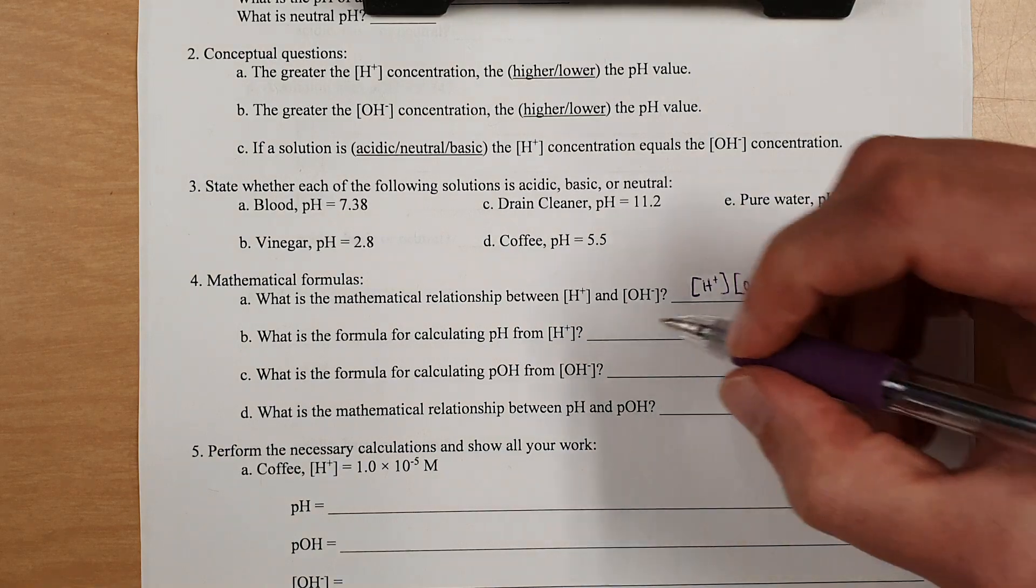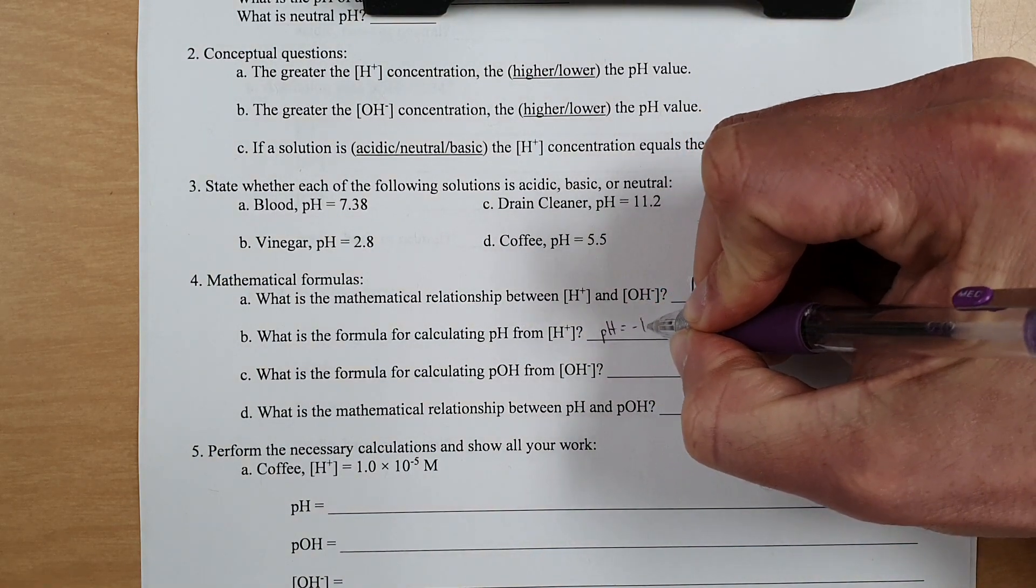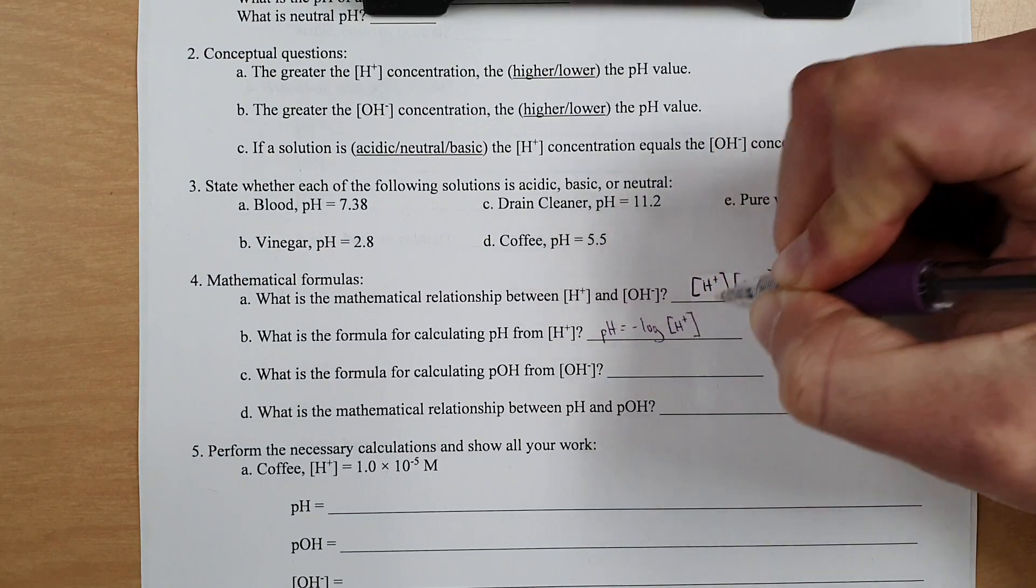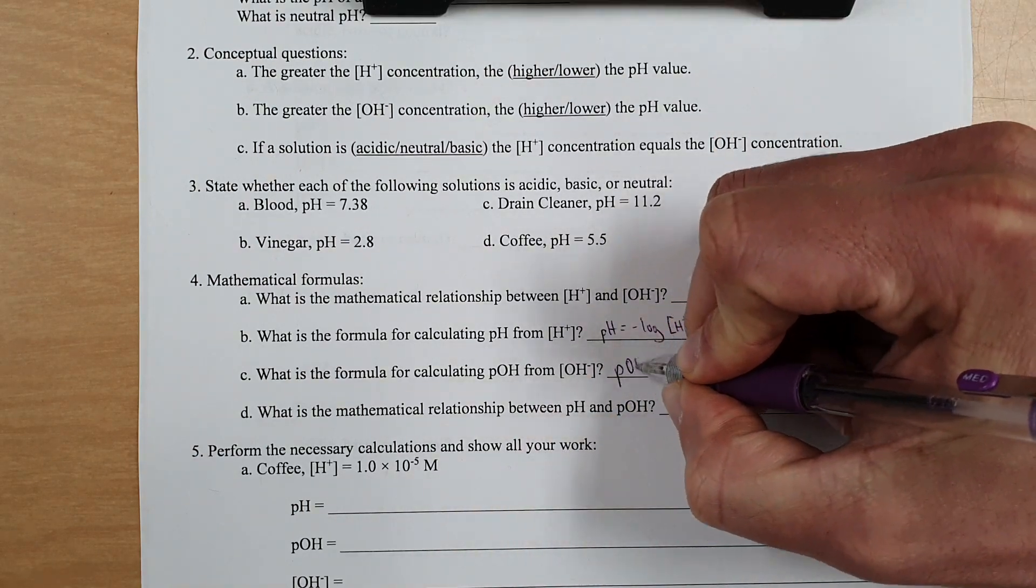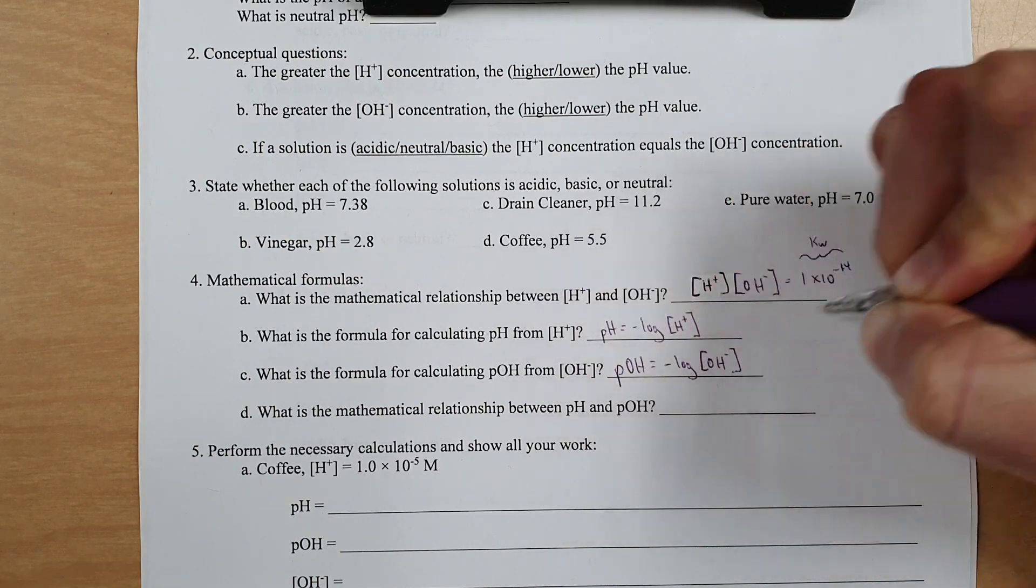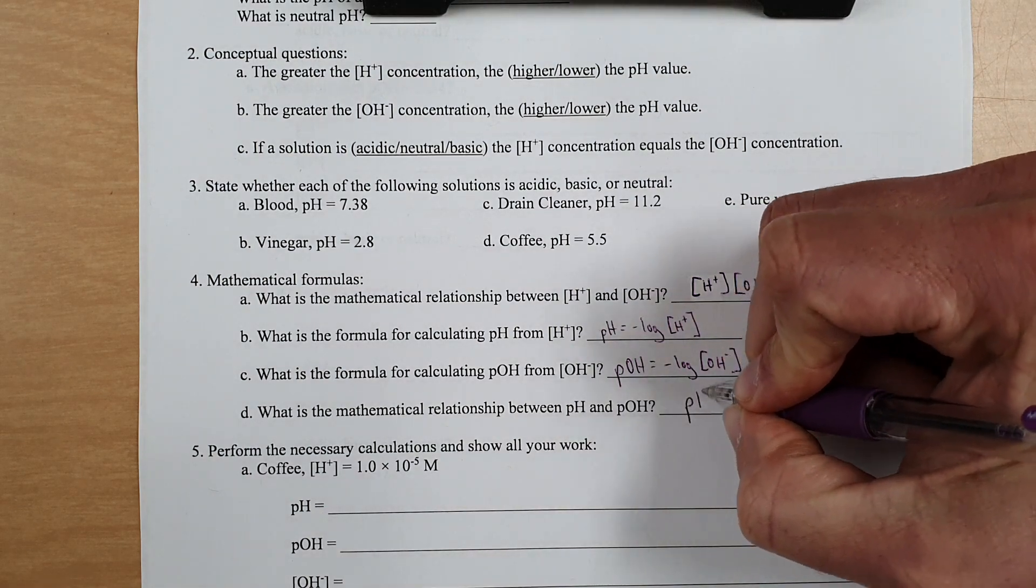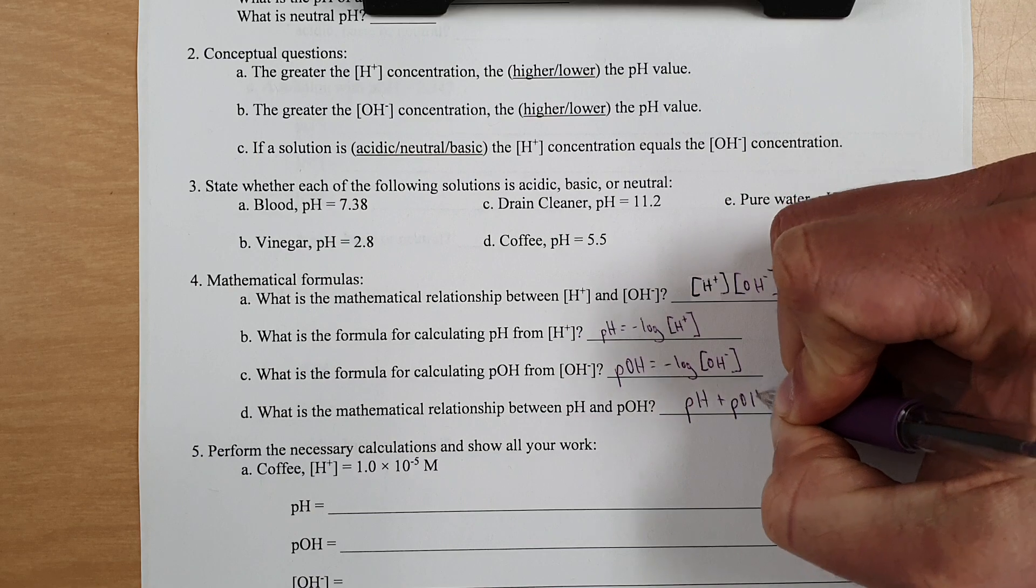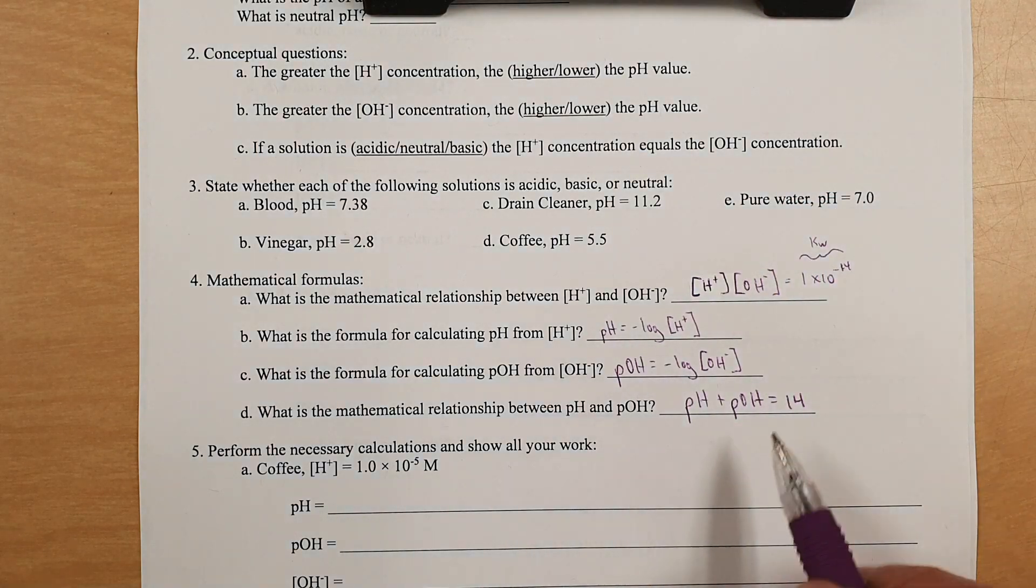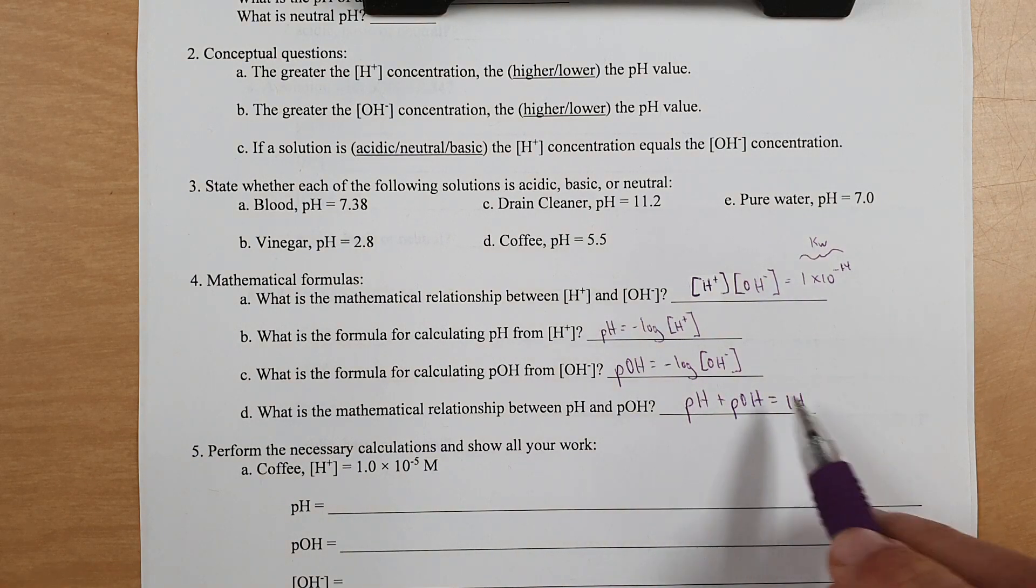What's the formula for calculating pH from hydrogen ion concentration? pH equals negative log of hydrogen ion concentration. pOH, likewise, is negative log of hydroxide ion concentration. Mathematical relationship between the two? pH plus pOH equals 14. And so you can treat this as an algebra equation and solve, if you're given one, solve for the other easily.